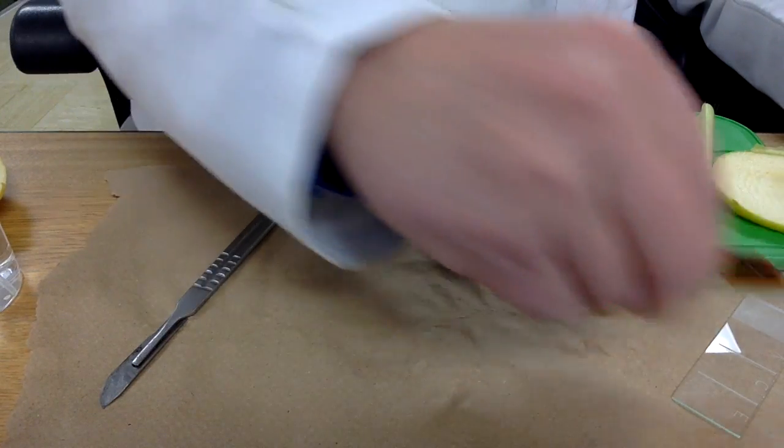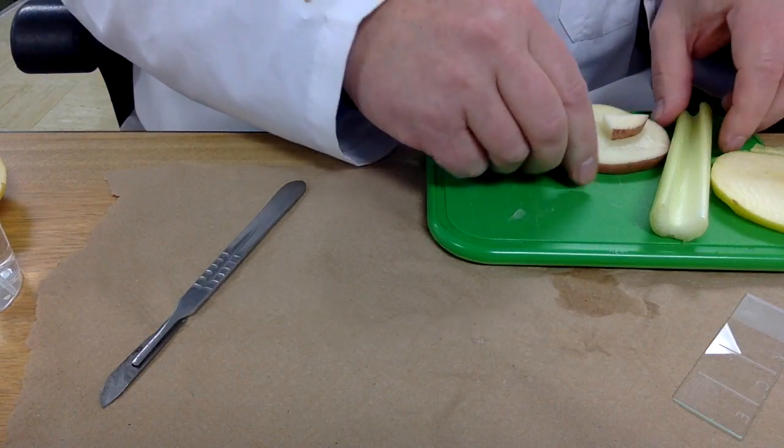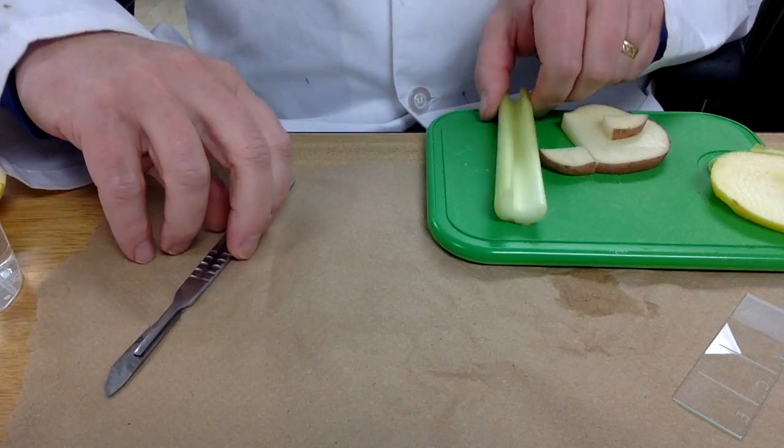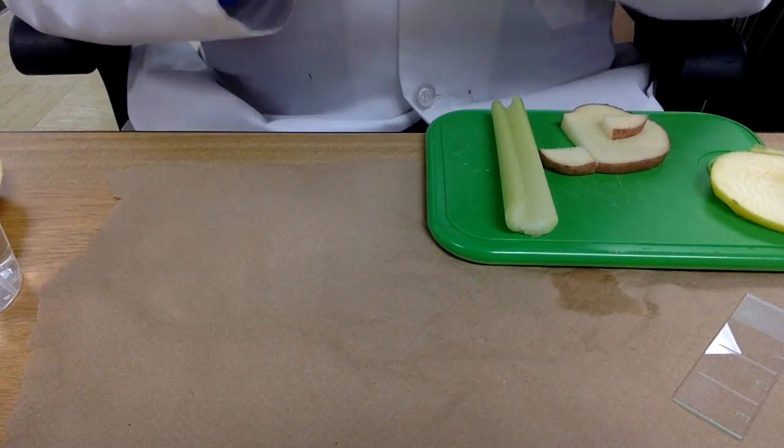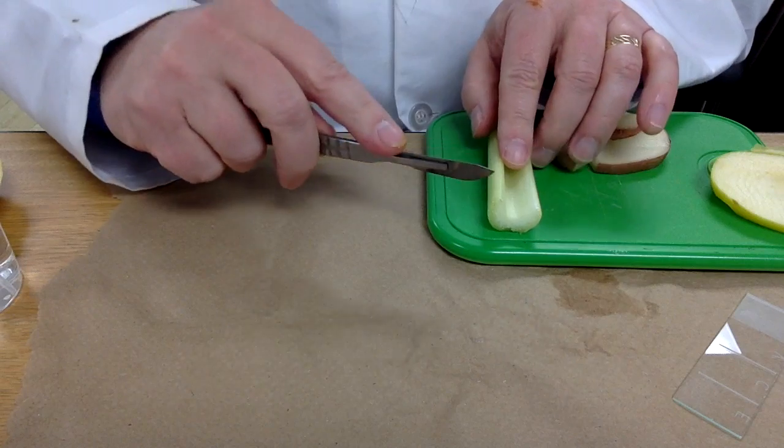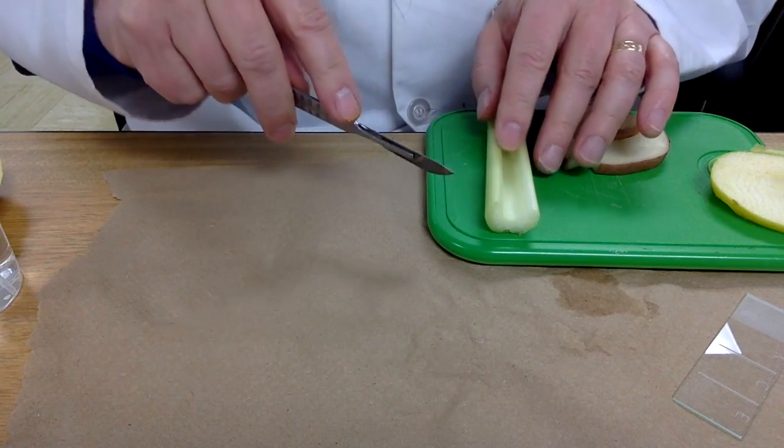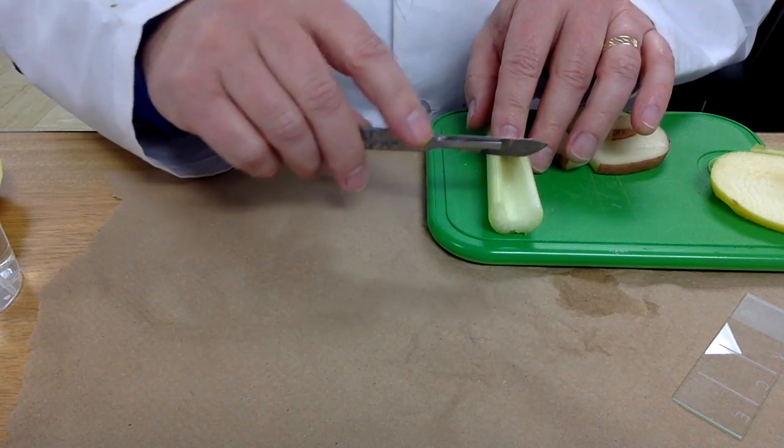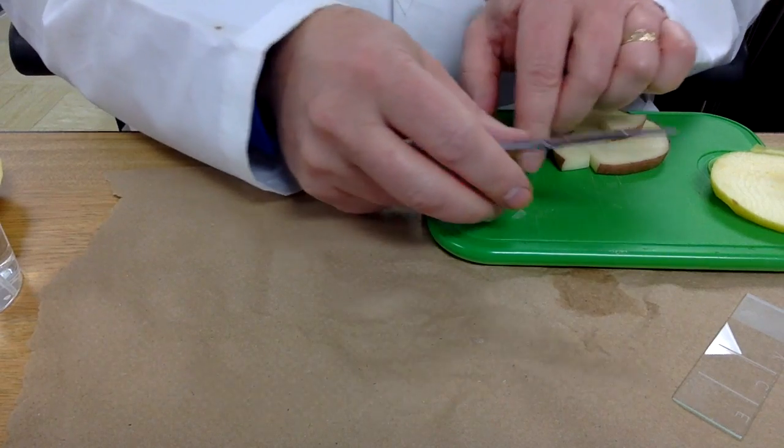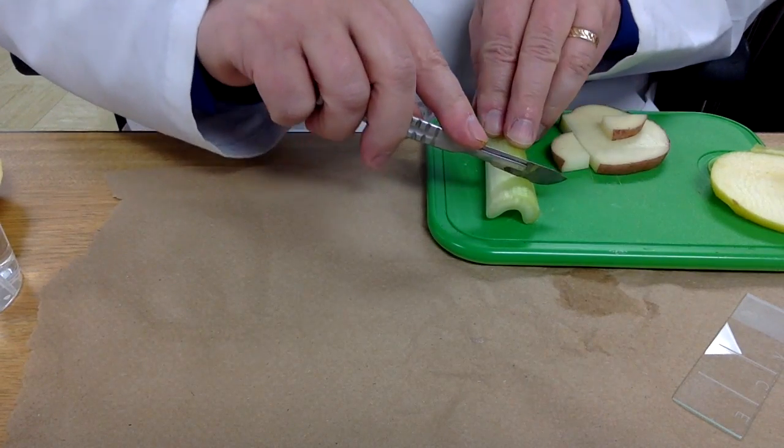What I'll be showing you with the celery are two basic cuts. The first cut I will make is called a cross cut. I'm going to slice right across the celery stem.